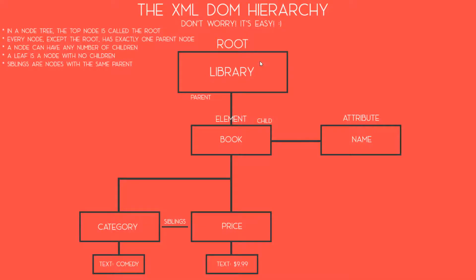If we look at the top, we have the parent node of the document. This node is what's referred to as the root node. This is where all the other nodes are nested. If we take a look at the node just beneath the root node, we can see that it's the book element. This can also be referred to as the child node of its parent, which would be the root node.